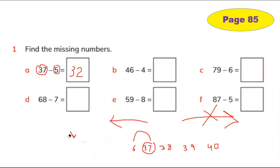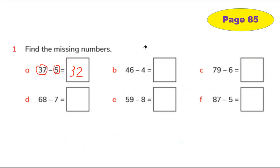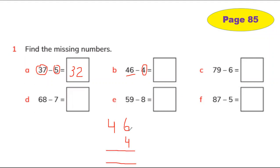Now I'm going to show you another method. I'll write 46. Here is the number 46. We have 4 tens and 6 ones. I'm going to write 4 underneath the 6, draw a line, and add the minus sign. When you do minus, you must always put the big number first.